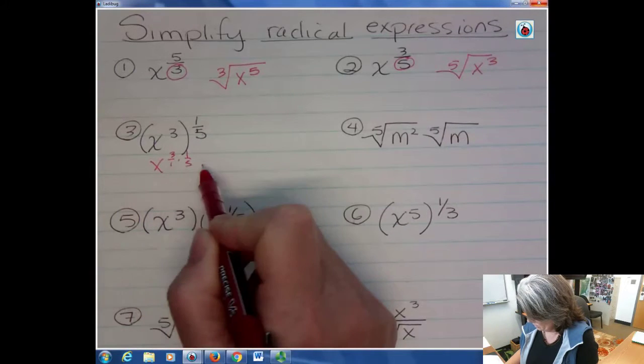When I have something like this, this is the same as saying x to the three over one times one over five, which is x to the three fifths, which goes right back to this, right? It's the same thing as x to the three fifths. So therefore, in the radical form, it would be the fifth root of x to the third. So these two things are equal to each other.